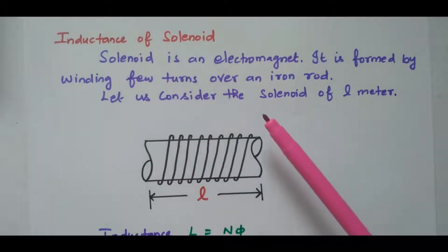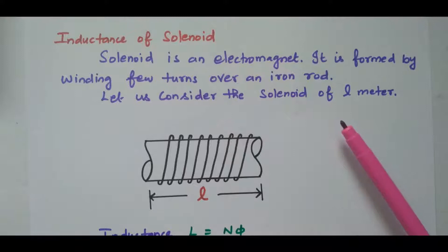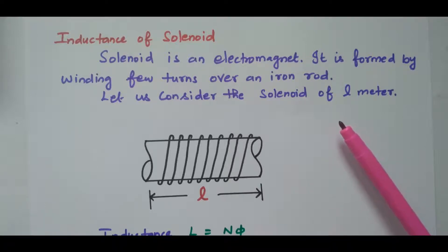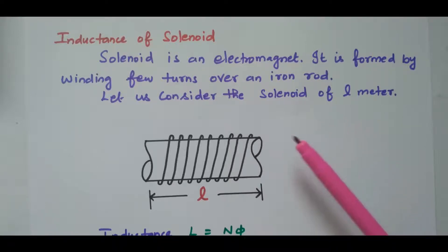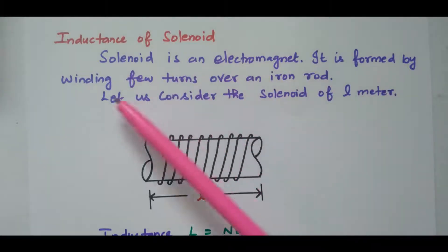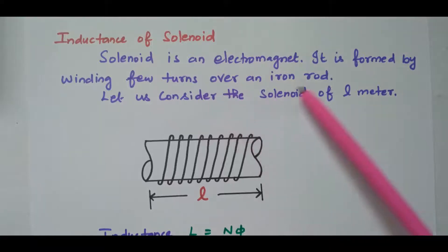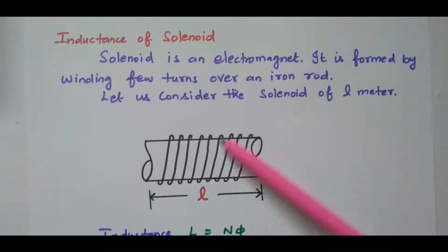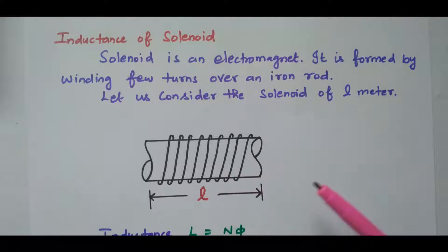A solenoid is nothing but an electromagnet. One iron rod is available, over which a coil is wound. When the current is flowing through the coil, it becomes an electromagnet. You refer this diagram — this is the iron rod over which the coils are wound. The current flowing through the coil makes it the electromagnet.